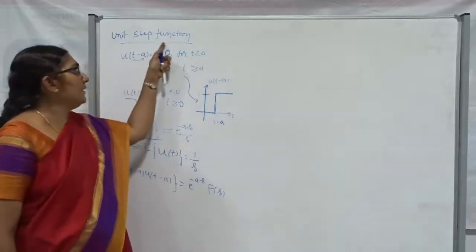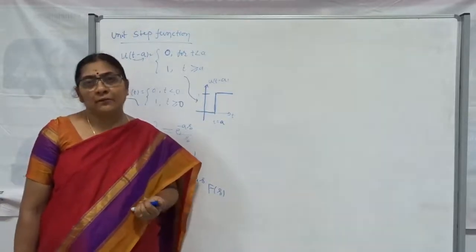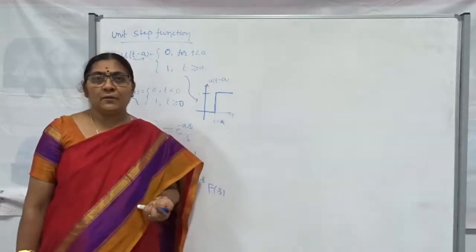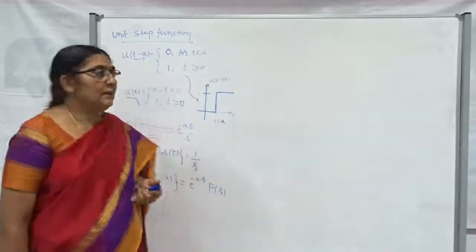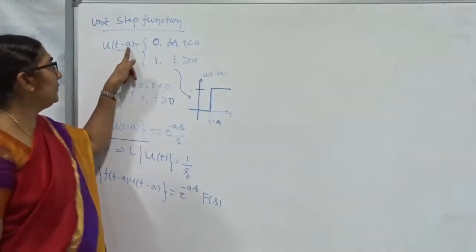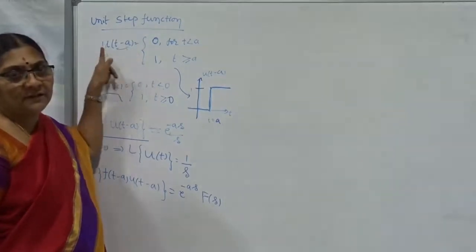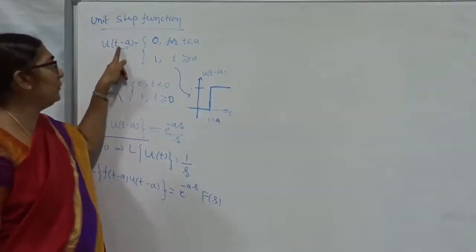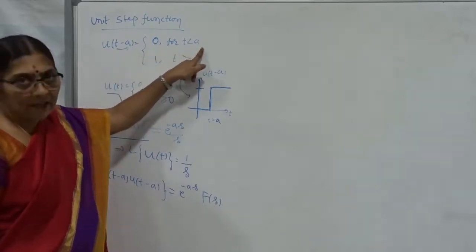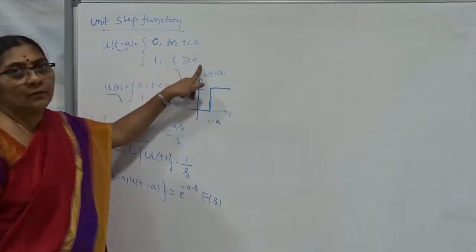Not only do we call it the unit step function, we also use another name — it is nothing but the Heaviside unit step function. Heaviside unit step function and unit step function are both the same. Here, I am defining the unit step function based on T shifted to some particular point, say A. Therefore, I have taken U of T minus A: it is 0 when T is less than A, and 1 for T greater than or equal to A.